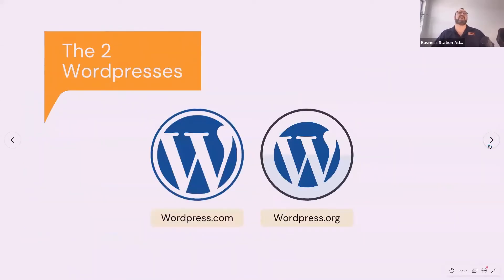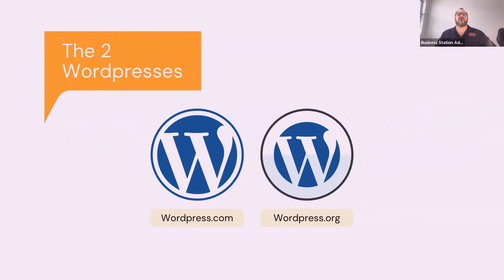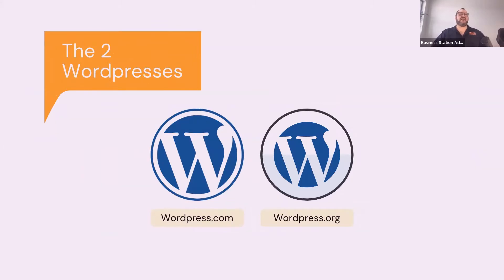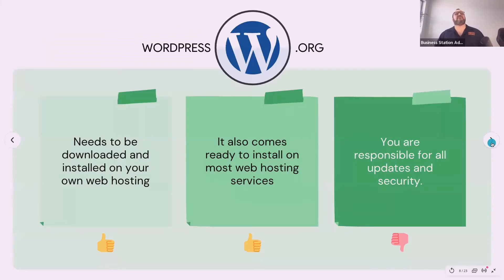There are two very different kinds of WordPress — you may have one or the other. There's WordPress.com and WordPress.org. While they're kind of similar, they're not exactly the same — they do have a few differences.